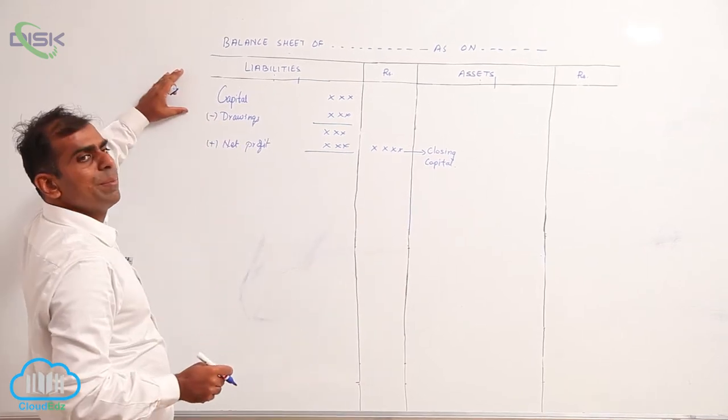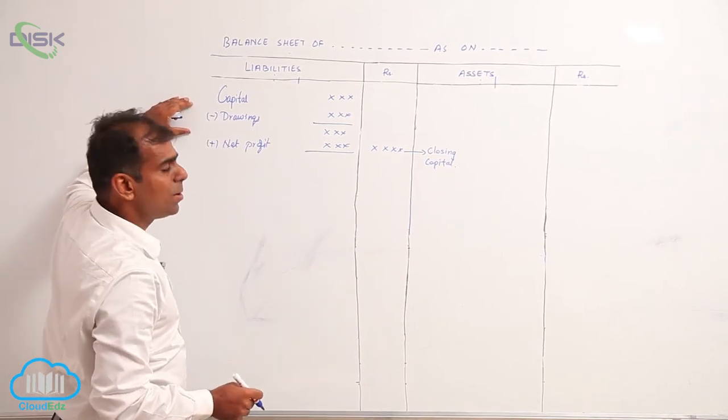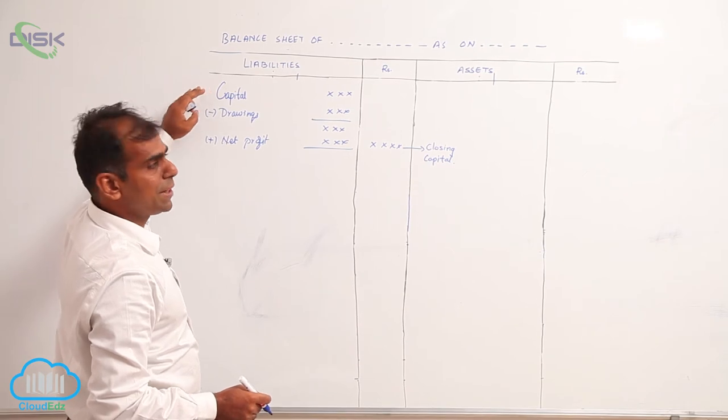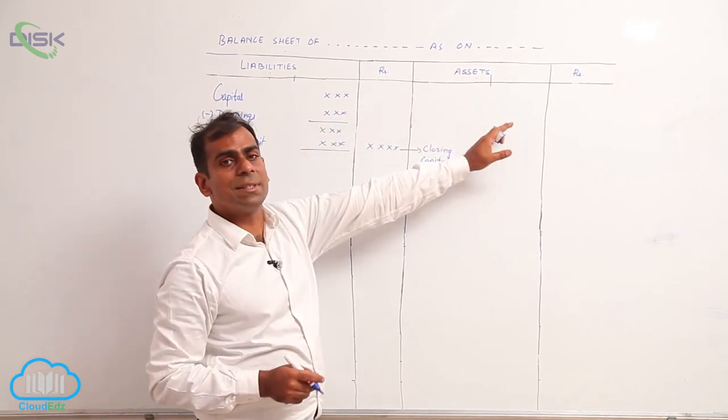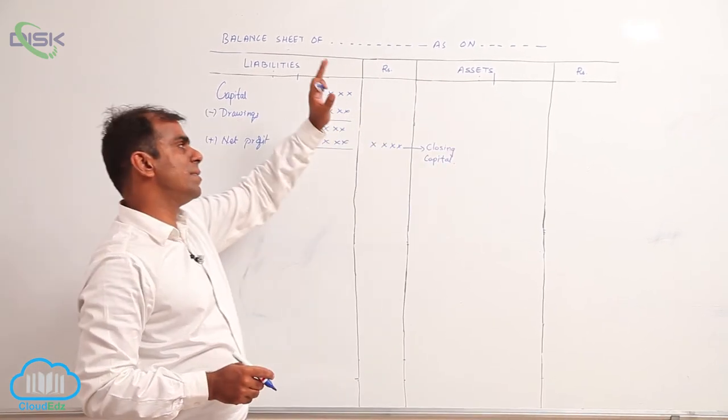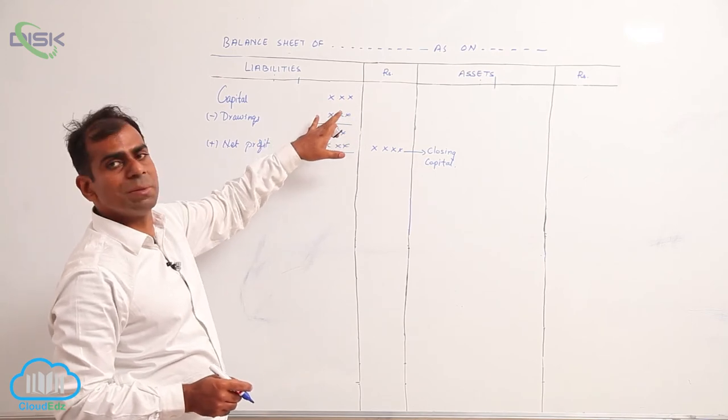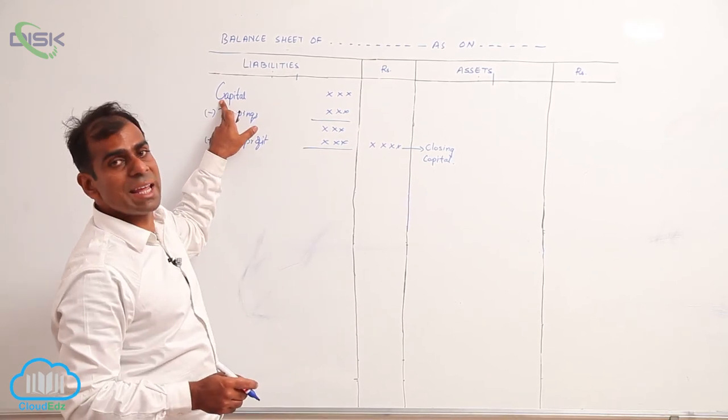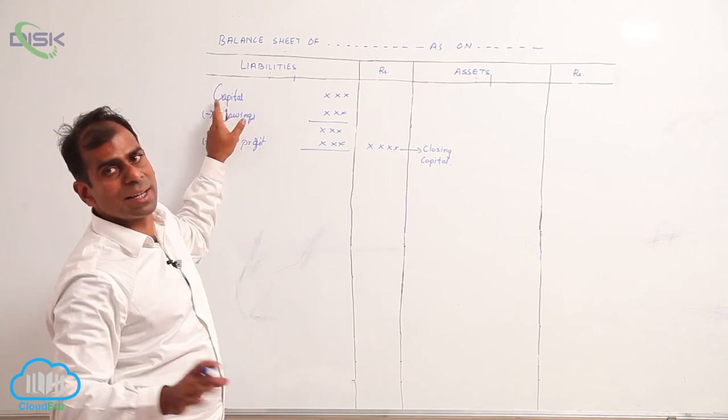This is your opening capital. Drawings is the amount of capital which you have taken home, meaning resources are taken away. When resources are taken away, the same should be deducted from the owner's claim, which is nothing but capital.